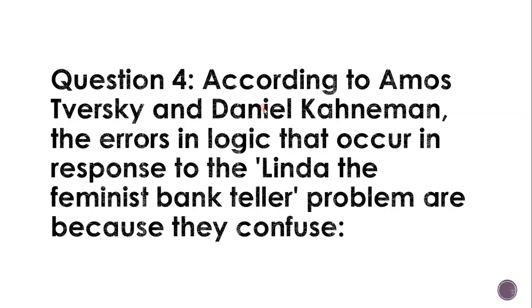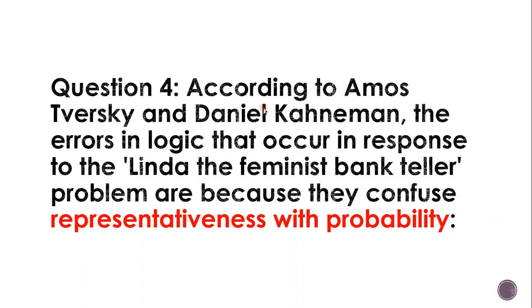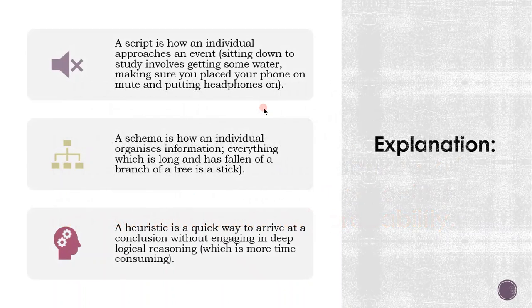Question four. According to Amos Tversky and Daniel Kahneman, there is a logical error that occurs in response to the Linda the feminist bank teller problem because people confuse probability with representativeness. A script is how an individual approaches an event — for example, sitting down to study involves getting some water, putting your phone on mute, and putting headphones on. A schema is how an individual organises information — everything which is long and has fallen off a branch of a tree is a stick. A heuristic is a quick way to arrive at a conclusion without engaging in deep logical reasoning — just a quick rule of thumb.